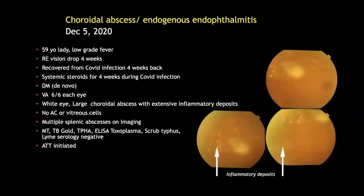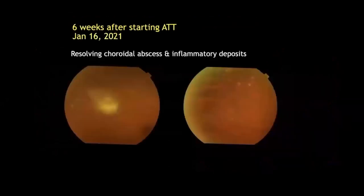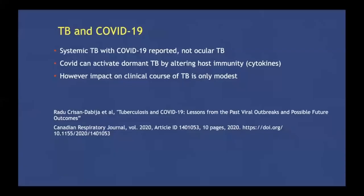A 59-year-old lady presented in December last year with blurring of vision for four weeks. There was a large choroidal abscess with inflammatory deposits. These symptoms had started during her COVID infection four weeks prior, at which time she had also developed diabetes. All investigations were negative. Based on the clinical picture she was placed on anti-tubercular therapy with rapid resolution at six weeks and complete clearing at six months. Systemic TB with COVID-19 has been reported but not ocular tuberculosis. It is speculated that COVID-19 can activate dormant TB by altering host immunity.